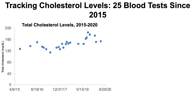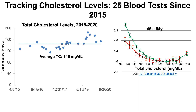Here we see that data. On the y-axis we've got total cholesterol in milligrams per deciliter plotted against time. Each blue point corresponds to a total cholesterol value for a given date. My average total cholesterol during that period is 145 milligrams per deciliter. And based on mortality risk data for 45 to 54 year olds — I'm currently 47 years old — that puts me at about 60% higher risk of death for all causes when compared with someone with higher cholesterol levels, in this case around 220.